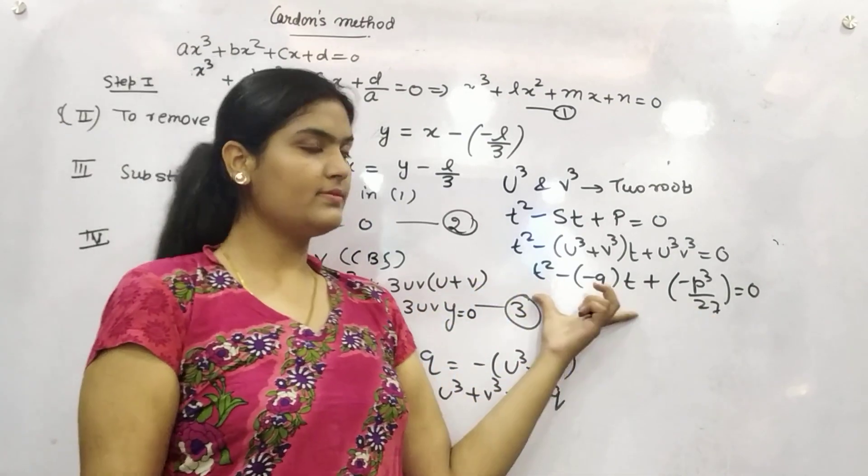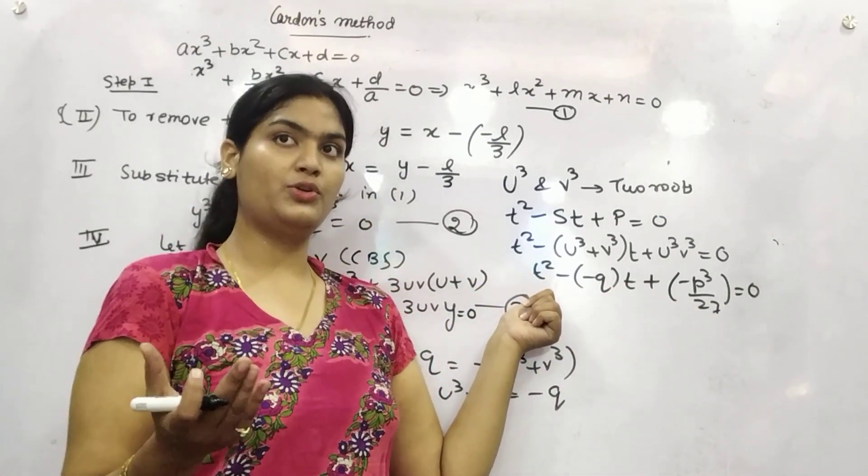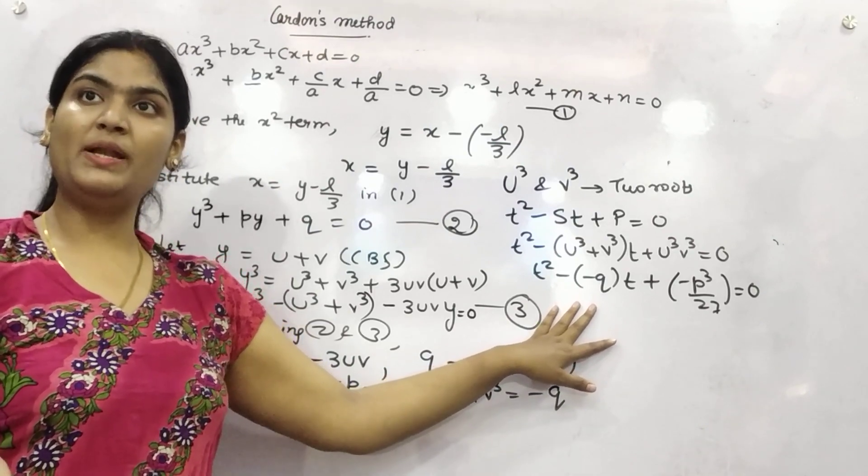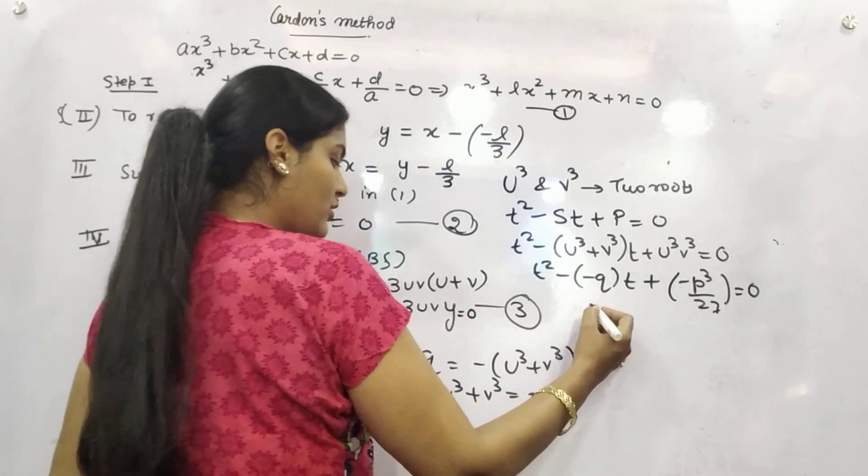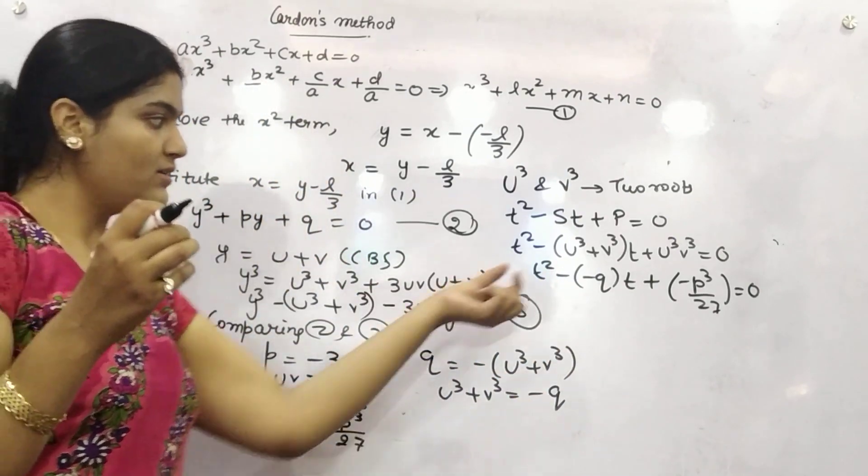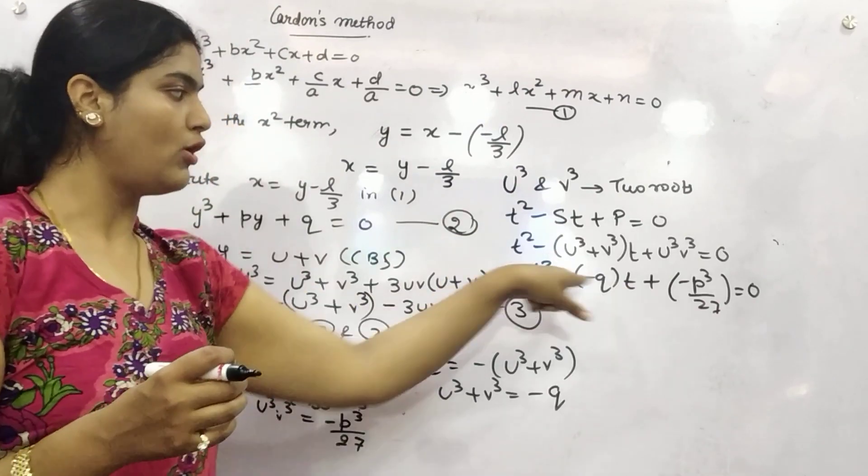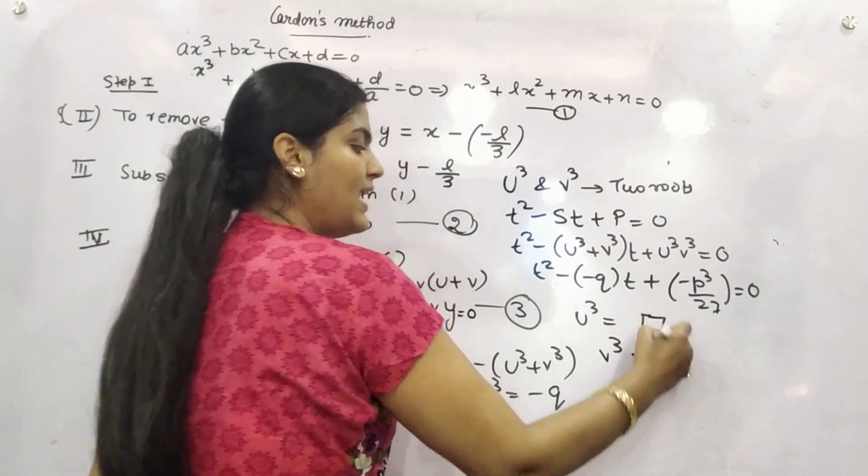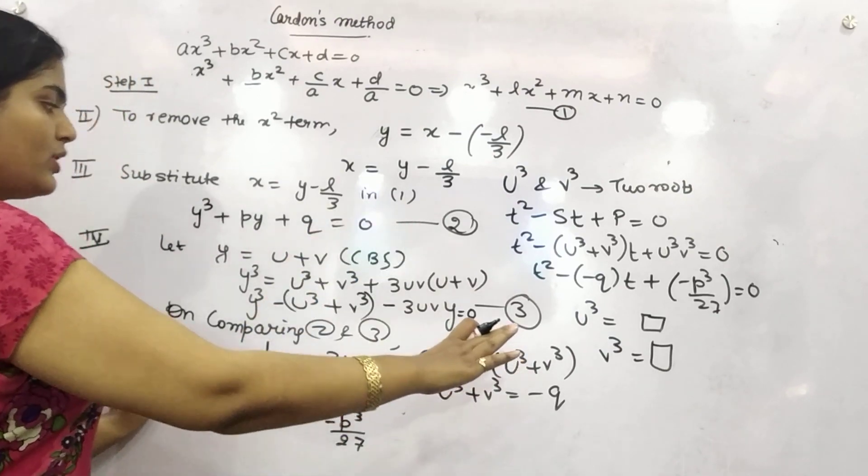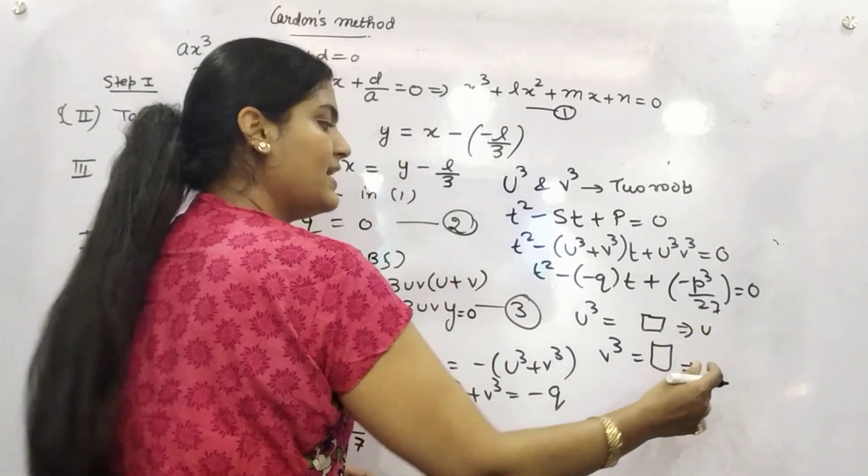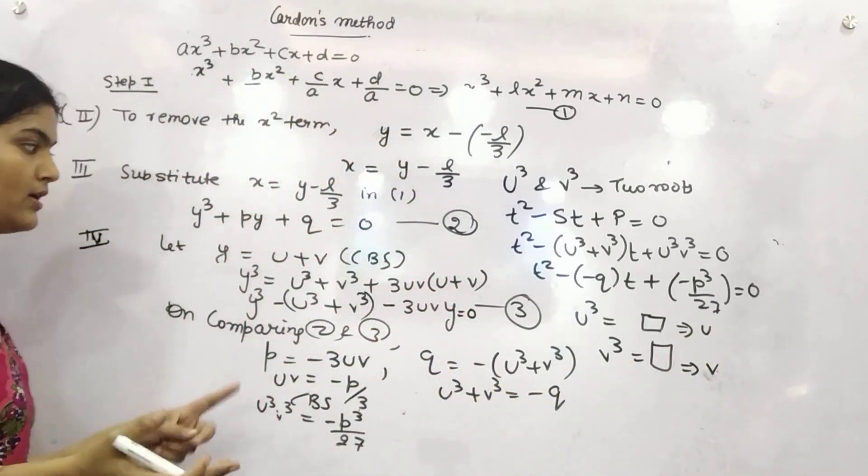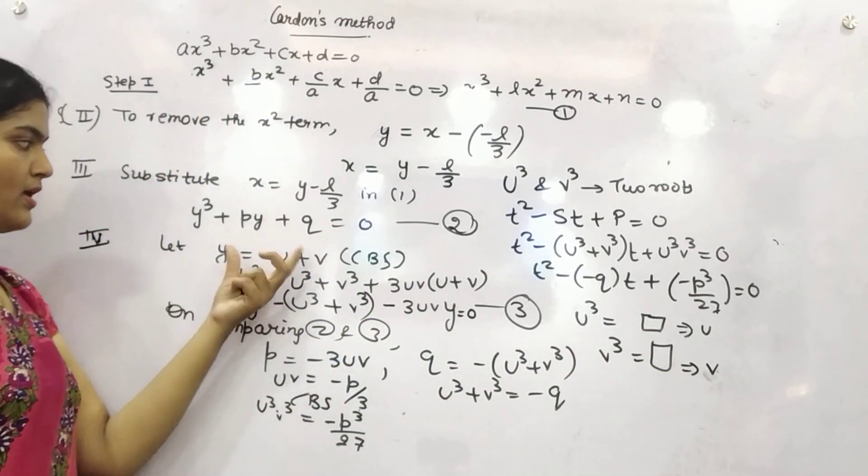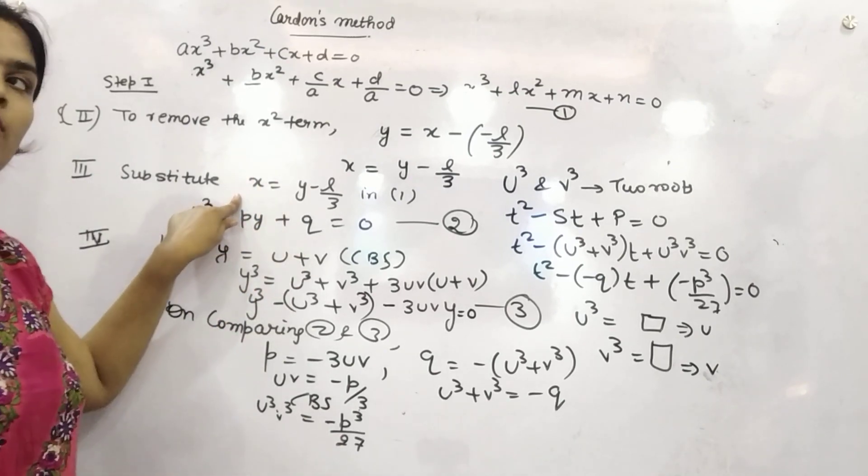Thereafter, you can solve this. Because this is a quadratic equation, so you can solve it by any of the methods like quadratic formula or splitting the term method. Once you will find out the value of t, the value of t will give you the values of u cube and v cube. You will have two values, u cube and v cube. You can put them and then thereafter you can find out the value of u and v as well by taking cube root. Once you will find the value of u and v, you can put it here. You will find the value of y. Once you will find the value of y, you can put it here and you can get value of x.